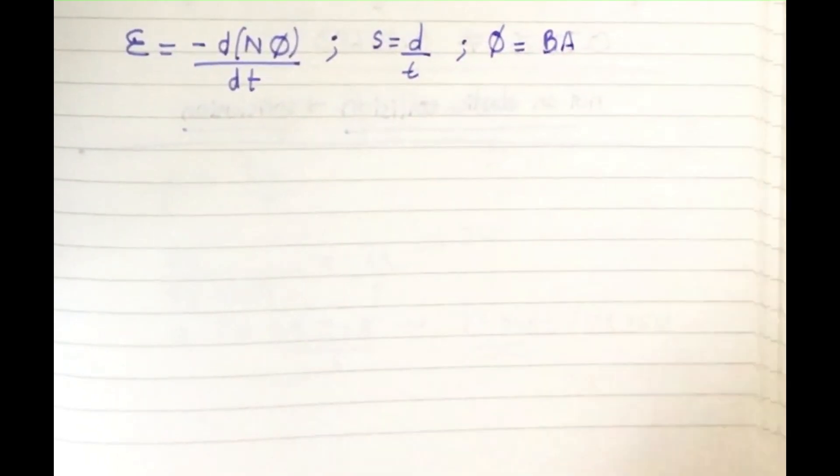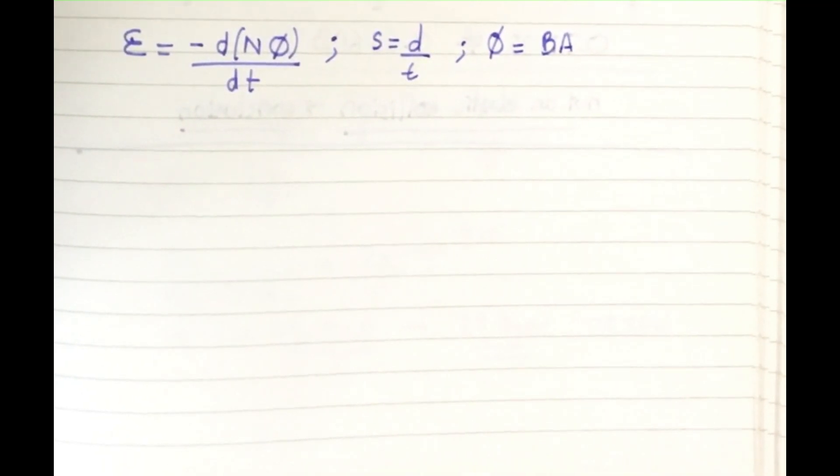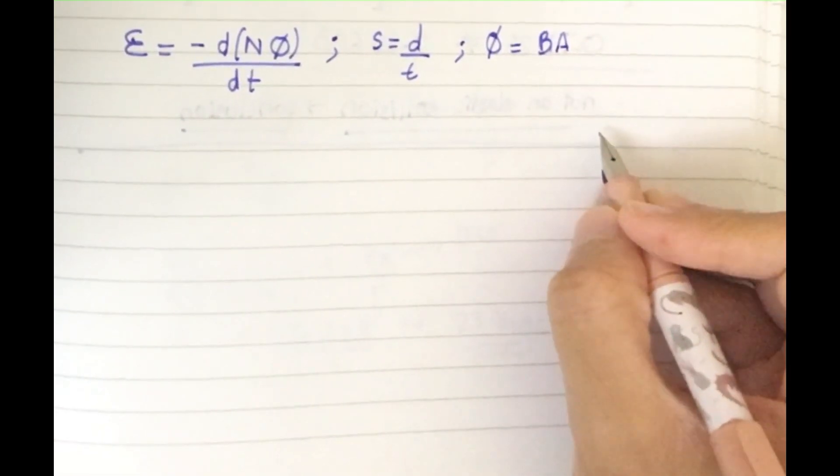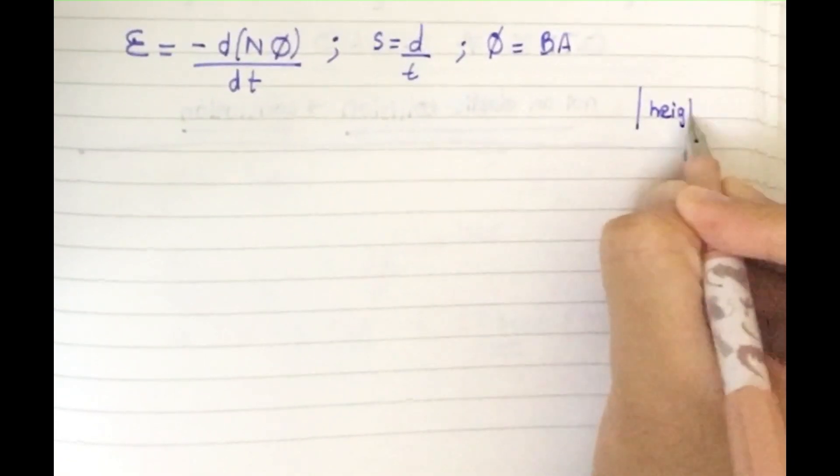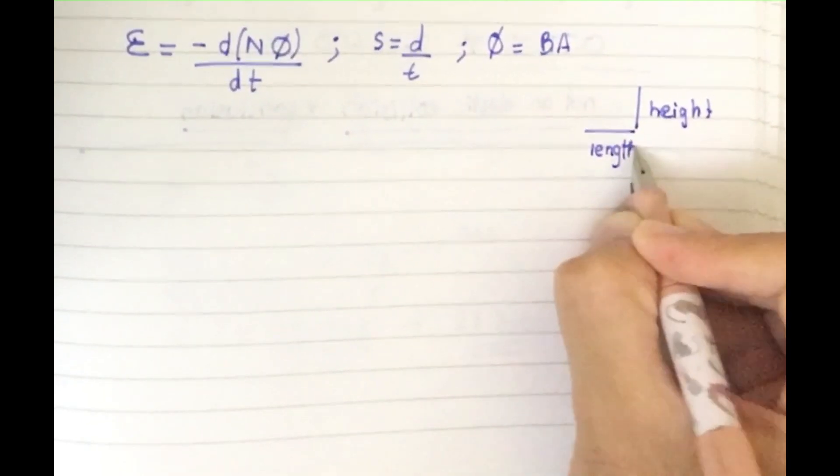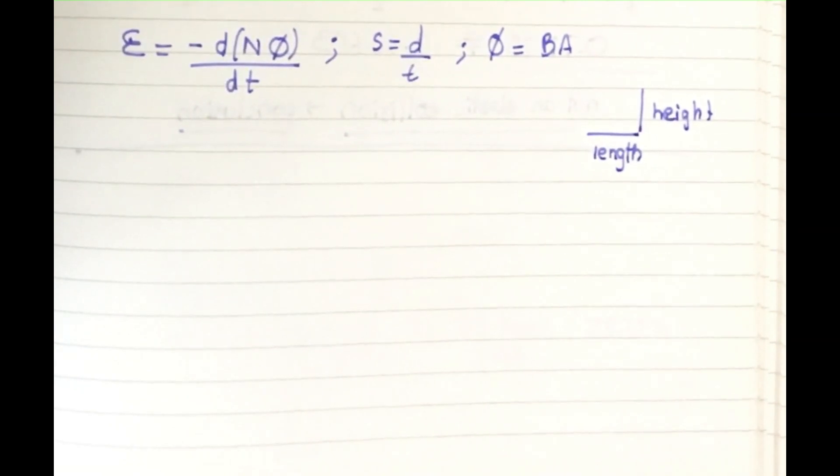Now you might be wondering why I use s equals d/t. Remember which is the height and which is length. Height is this direction, and underneath is the length, if you might not know what is height and what is length.